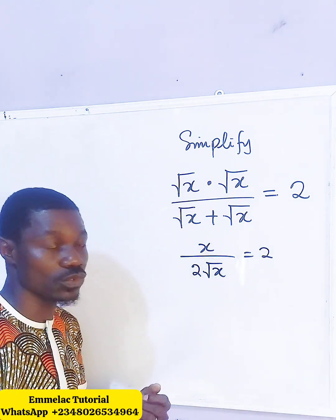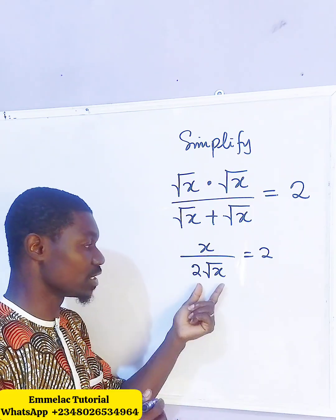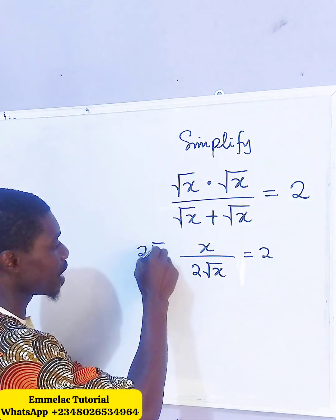Now the next thing we need to do here is to eliminate this denominator 2 root x. And how do we do that? Let's multiply both sides by 2 root x.